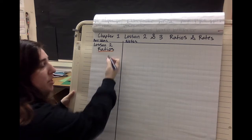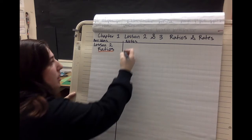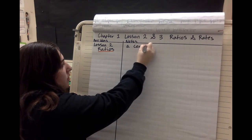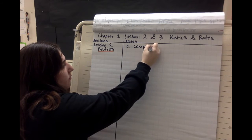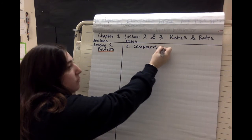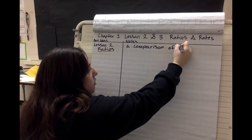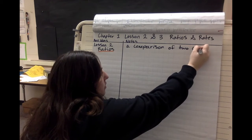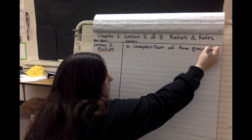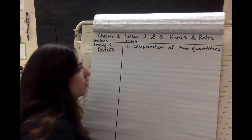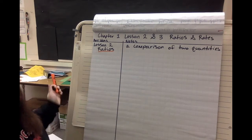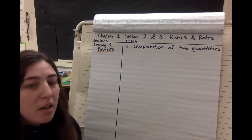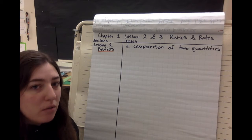So what is a ratio? A ratio is a comparison of two quantities. We're comparing two different quantities. What is a quantity? A quantity is an amount.